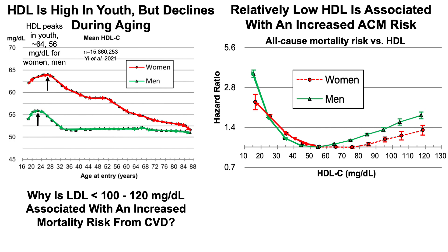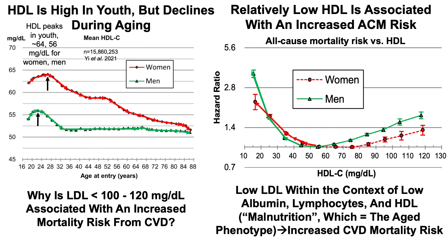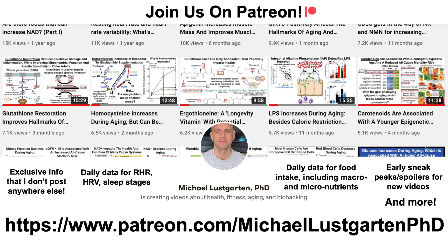To bring it back to the original question: why is LDL less than 100 to 120 mg per deciliter associated with an increased mortality risk from cardiovascular disease? Low LDL within the context of low albumin, lymphocytes, and HDL — which is defined as malnutrition — also equals the aged phenotype. That collectively could potentially explain the increased cardiovascular mortality risk in the context of low LDL. If you're interested in more about attempts to biohack aging, check us out on Patreon. Thanks for watching.